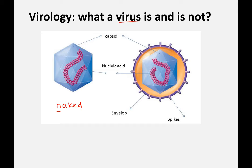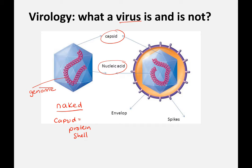One type is called naked. What's shown in blue is what we call a capsid — a protein shell. What's shown in pink is the nucleic acid, which is the genome of the virus. It can be DNA or RNA, and it can be double-stranded or single-stranded, with multiple pieces or a single piece, circular or linear. All viruses are made up of a capsid protein shell and genetic information.